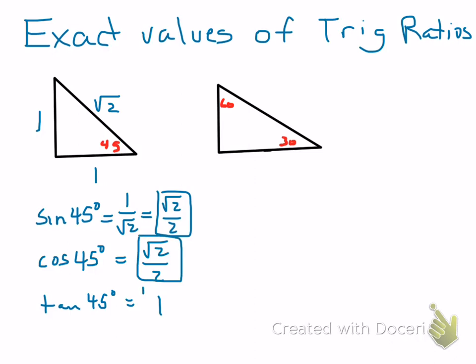Those are the three values you would need for that triangle. Now the 30-60-90 triangle, because it has two different angles, is going to have different values for the sine and cosine.